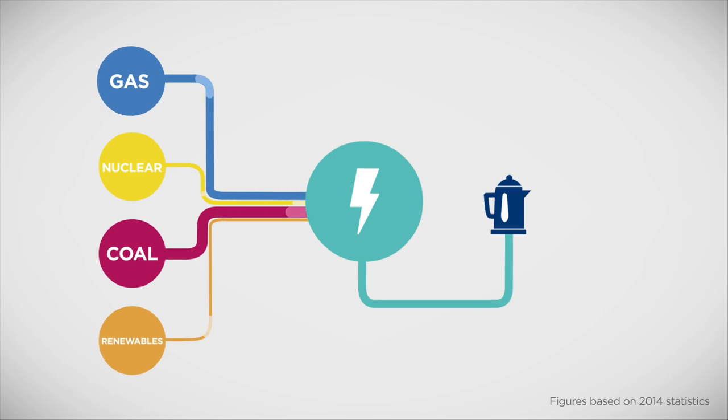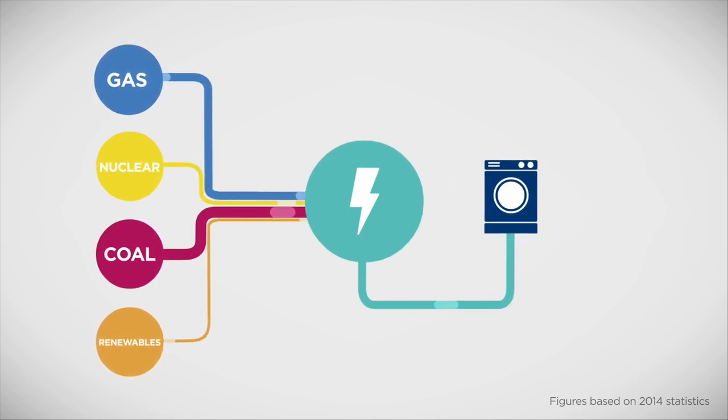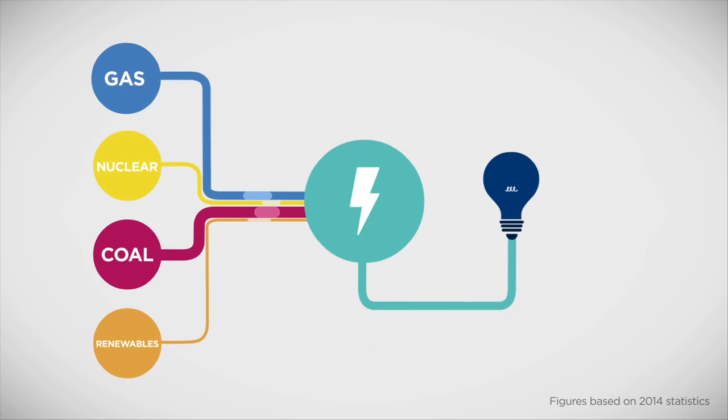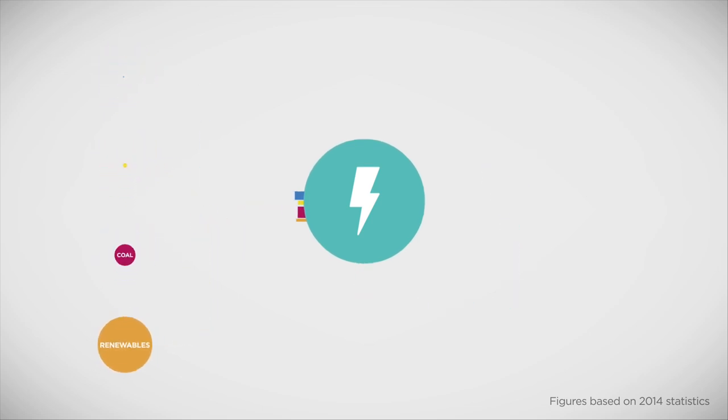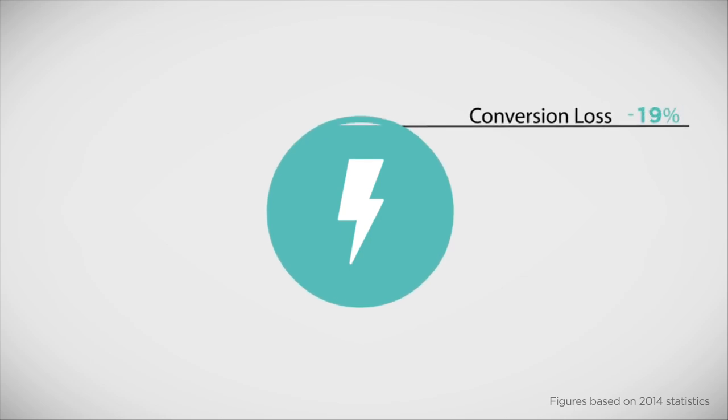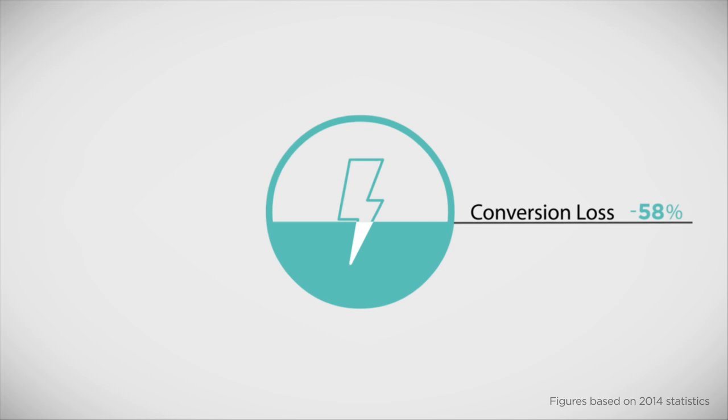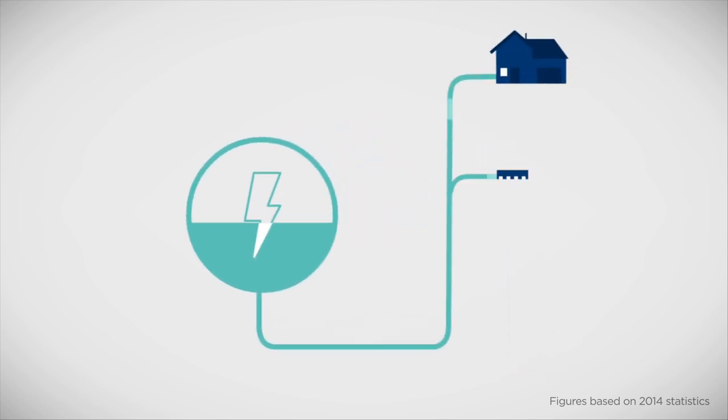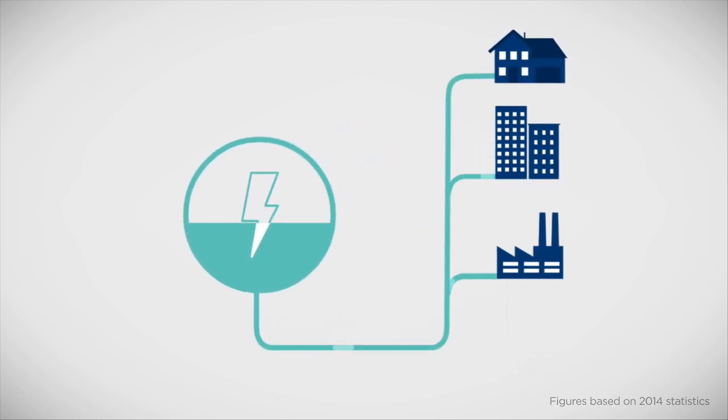Electricity is the most versatile form of energy we know, and easy to use. When energy is changed into another form, it's normal to lose some. For example, on average, over half the original energy is lost when we generate electricity. The rest powers millions of devices in homes, offices and industry.